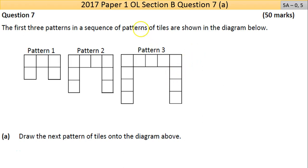Hi and welcome to question 7 of the 2017 Paper 1 Ordinary Level Leaving Cert. This question is a 5A in the grade, meaning it's hit or miss - either right or wrong. The first three patterns in a sequence of patterns of tiles are shown in the diagram below.